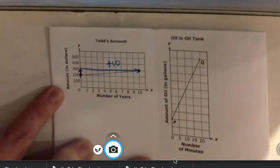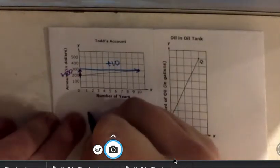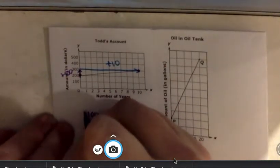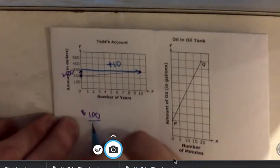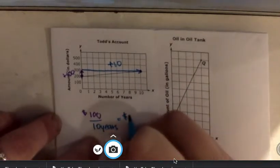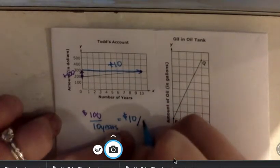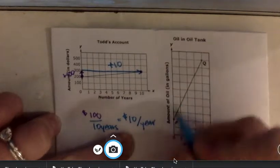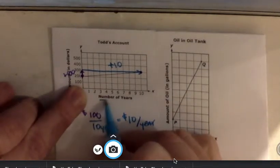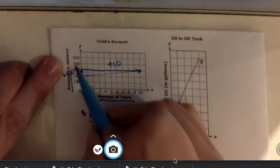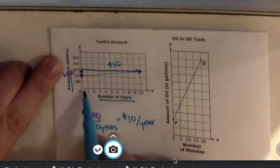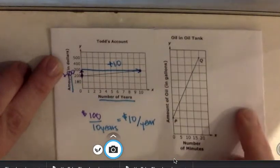So if we were to look at that $100, so the rise of $100 over 10 years simplifies to $10 per year. It's important that we pay attention to the scale and the labels that are here. The scale for this is going up by $100, so $10 per year.